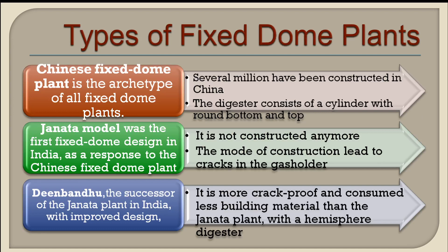These are the different designs of fixed dome plants: the Chinese fixed dome, then the Janata model developed in India in response to the Chinese design, and the Deenbandhu model — another Indian version that is the successor of the Janata model with an improved design. These three are the most common fixed dome types of biogas digesters.